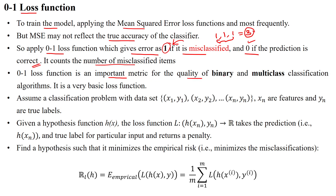The zero-one loss function is an important metric for the quality of binary and multi-class classification algorithms, but it is a very basic loss function. Assume the classification problem has a dataset with n samples: x1 with target output y1, x2 with target output y2, and so on. Here x represents the features and y represents the labels. For a given hypothesis function h(x), the loss function is calculated with respect to predicted output h(x_n) and target output y(n).